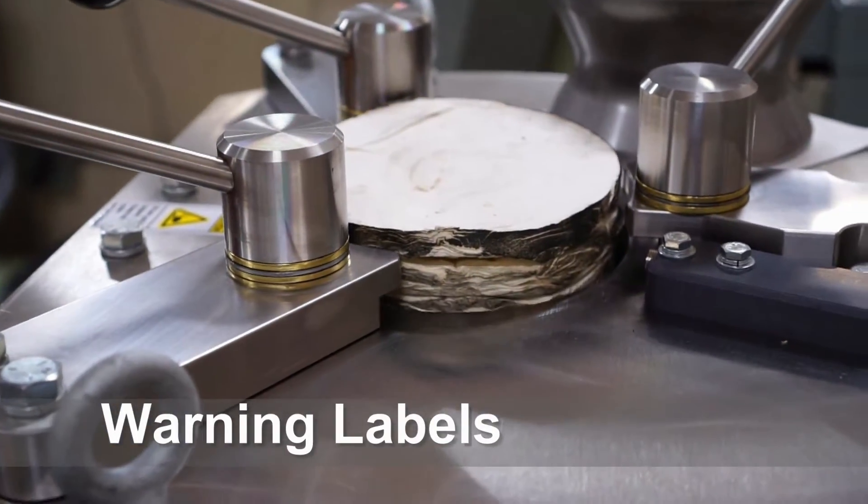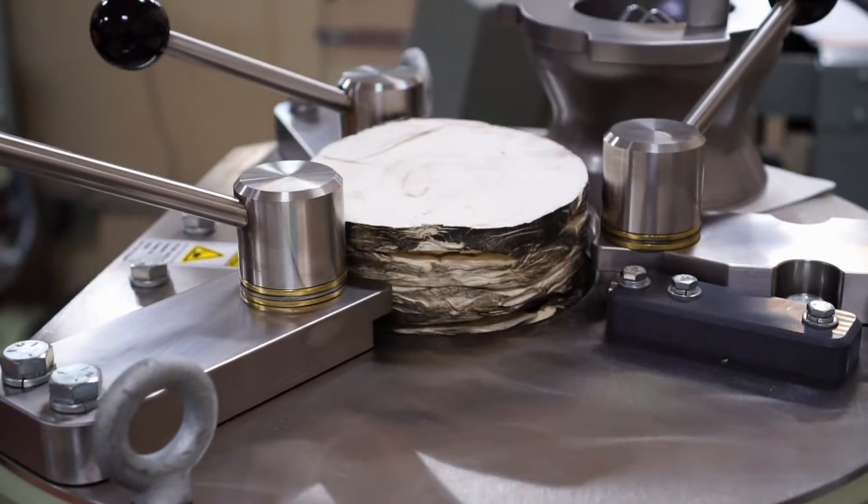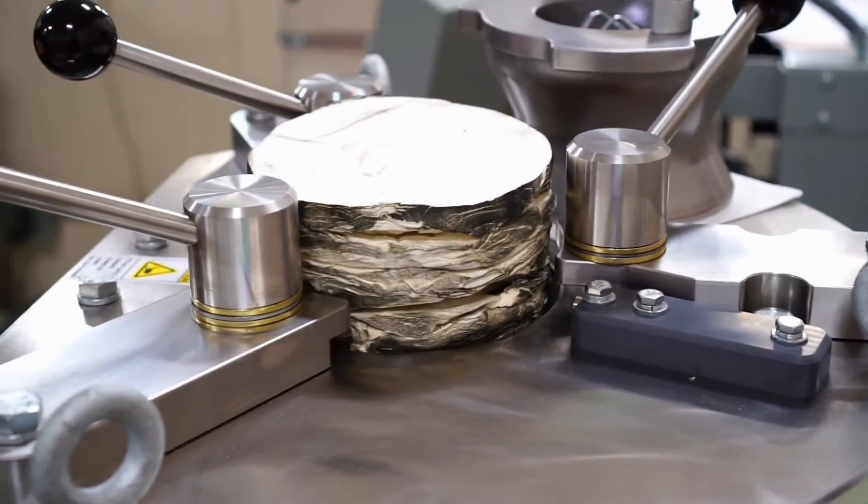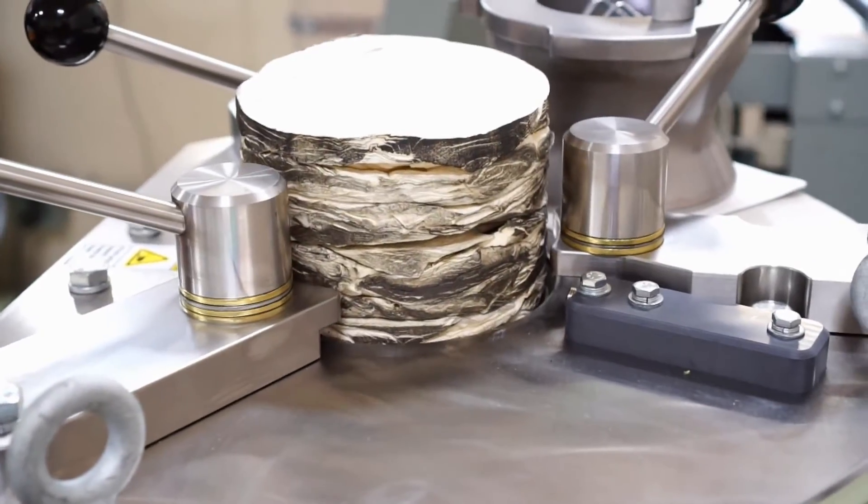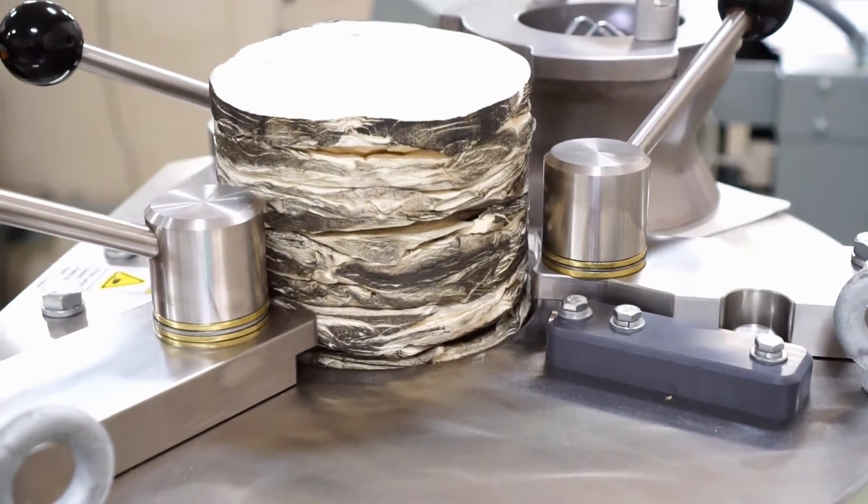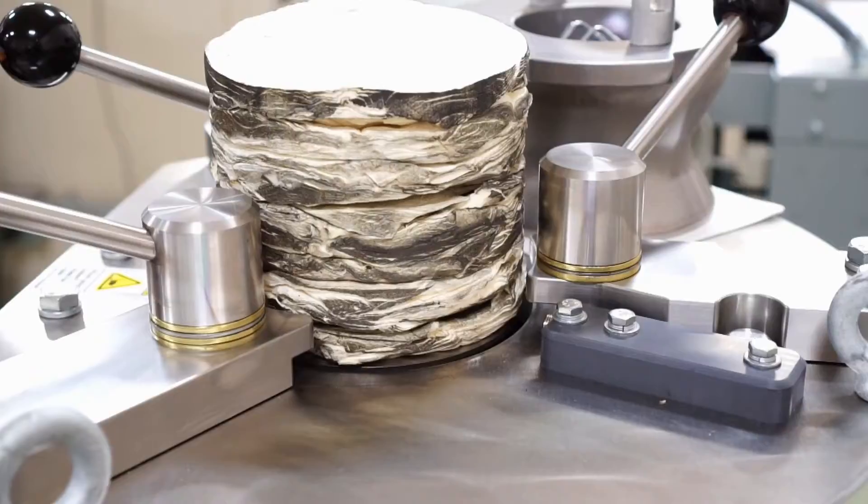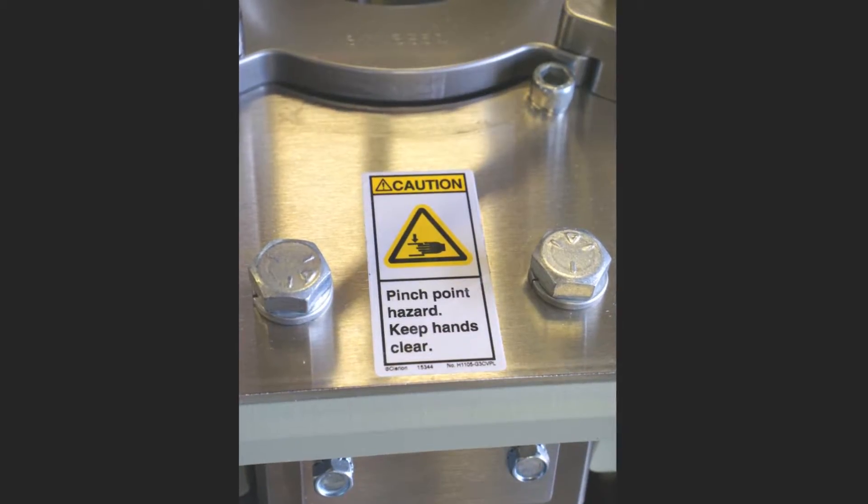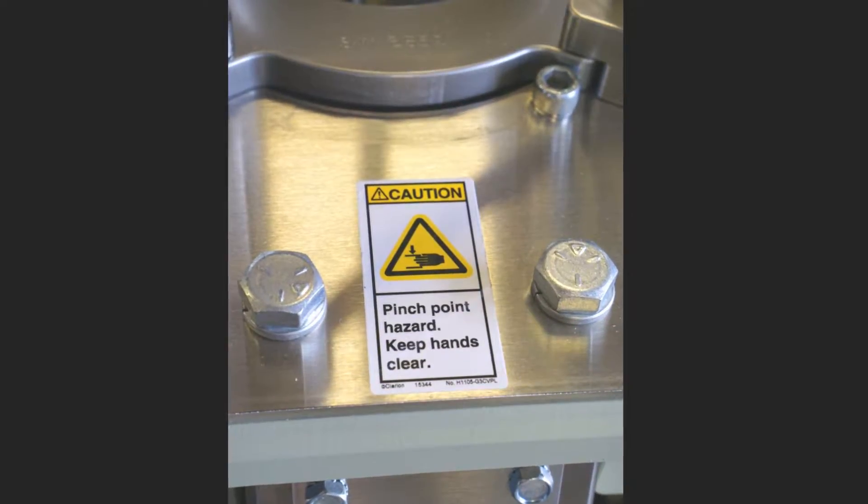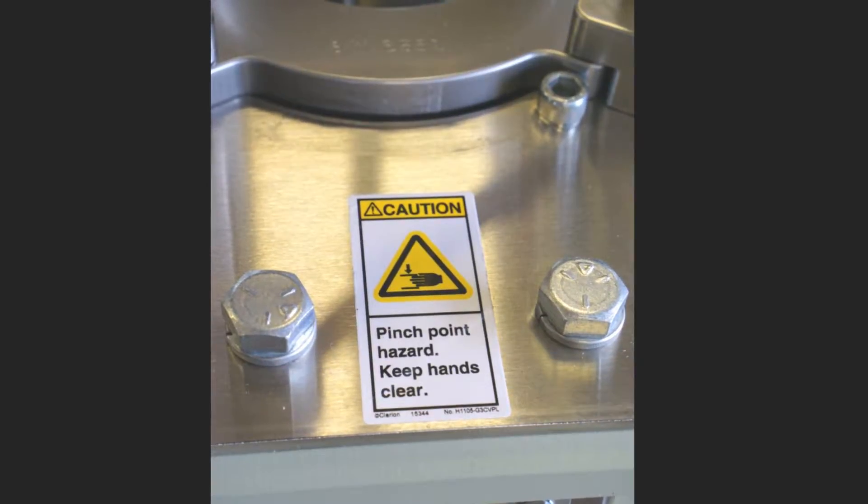As the specimen is extruded and it's rising relative to the stationary parts of the machine, a pinch point is created between the specimen and the top plate of the machine. Injury to the operator can result if the operator's fingers are placed into the top opening before the specimen begins to emerge. A label warns of this danger.